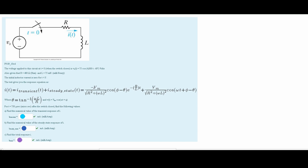First, we are going to solve for our i_transient. We have our negative v_max; we know this is our v_max. It's provided in our sinusoidal form, so it will be negative because this is part of the transient formula — 75.